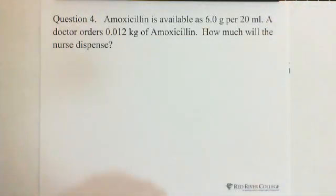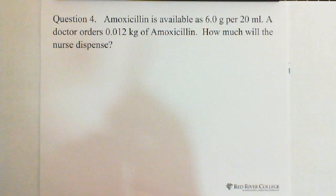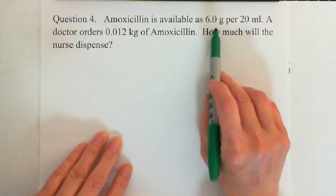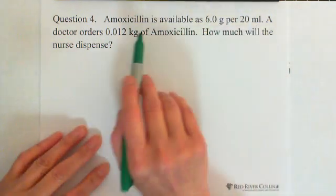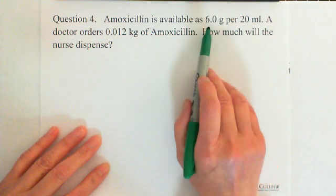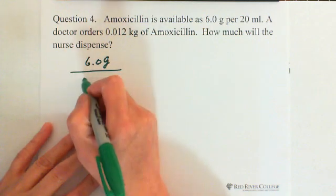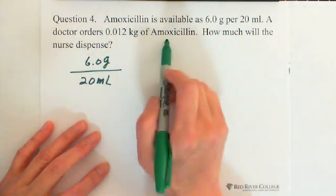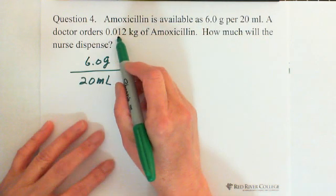Okay, first question — let's look at question 4. We continue with the tablet dosage calculation. Amoxicillin is available as 6 grams per 20 milliliters. A doctor ordered 0.012 kilograms of amoxicillin. How much will the nurse dispense? So the ordered dose is 0.012 kilograms.